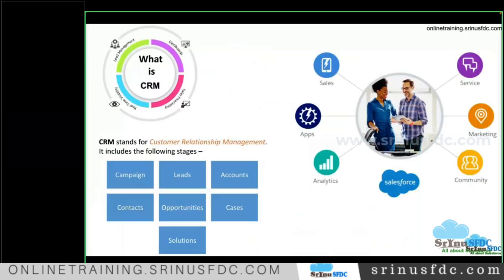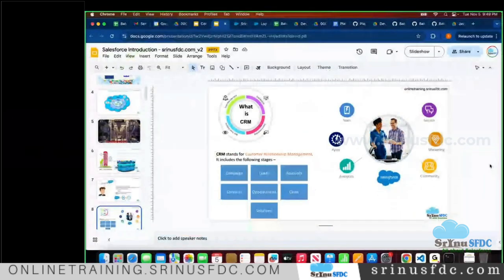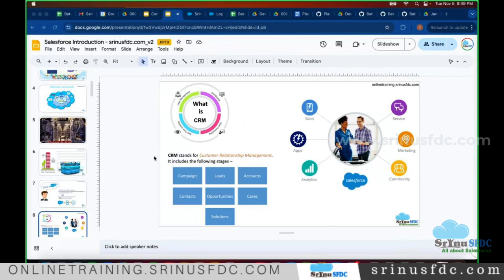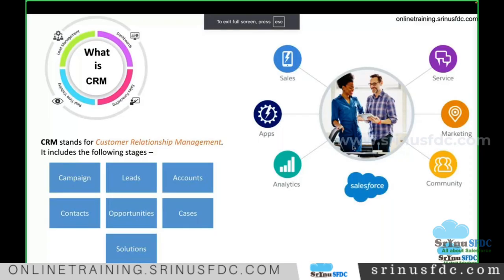The applications they offer are CRM applications. CRM means Customer Relationship Management. On a day-to-day basis, any business — all companies — use CRM. Any business, whether product-based or service-based, needs CRM. Product-based examples include Apple, which sells laptops, iPads, and iPhones, and Samsung. Service-based companies like AT&T provide network and internet services where you pay monthly.